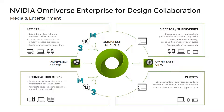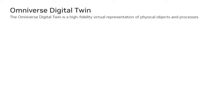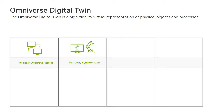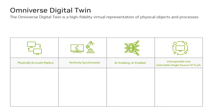Let's switch focus and explore another exciting feature of Omniverse — digital twins. Simply put, a digital twin is a high-fidelity virtual representation of physical objects and processes. From NVIDIA's perspective, a true digital twin must be a physically accurate replica, be perfectly synchronized with its real-world twin, leverage AI to create an autonomous feedback loop between the real world and its digital twin, and act as an interoperable and extensible single source of truth.